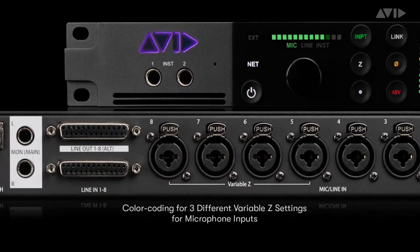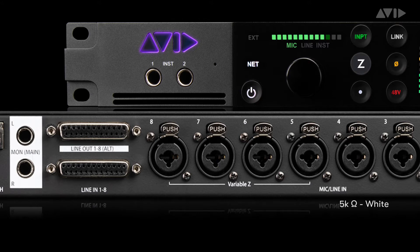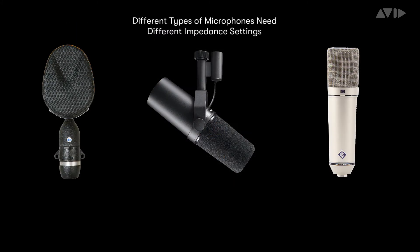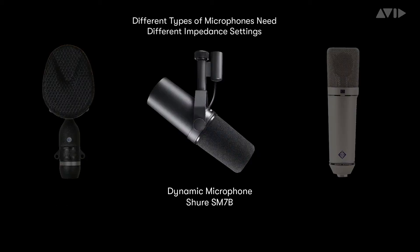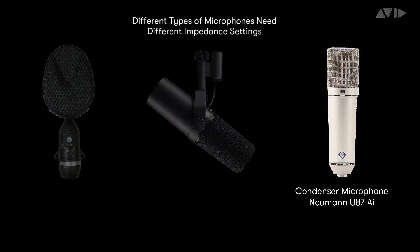The rear panel mic inputs 5 to 8 have 3 different settings that are colour-coded and switchable from the Carbon front panel. These are 5 kiloohms white, 50 kiloohms cyan, and 1 kiloohm fuchsia. This is particularly useful when switching between different types of microphones, such as ribbon, dynamic, or condenser.